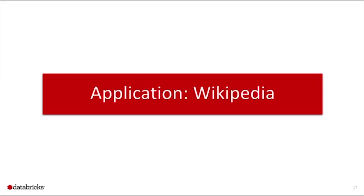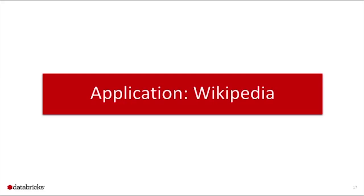The next application is Wikipedia. The first step was actually downloading Wikipedia — you can download all the text as one giant file, around 250 gigabytes, which takes several hours. Being impatient, and having a cluster available, I downloaded Wikipedia in 27 parts using my Spark cluster for speed.